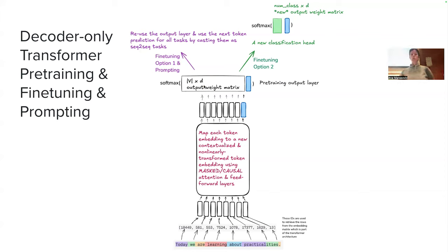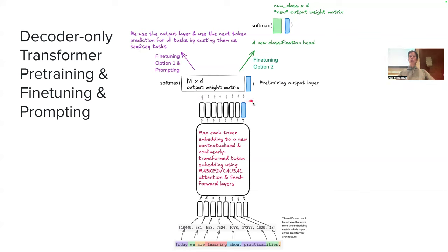Each token will be classified into one of the possible tokens in the vocabulary using a linear transformation into a vector of the size of the vocabulary, then softmax to get a probability distribution over the vocabulary from which we can sample. With a decoder-only transformer, you always use the representation of the last token so far to make the prediction for the next token. If predicting what comes after the current token, you use the final representation of the final token.